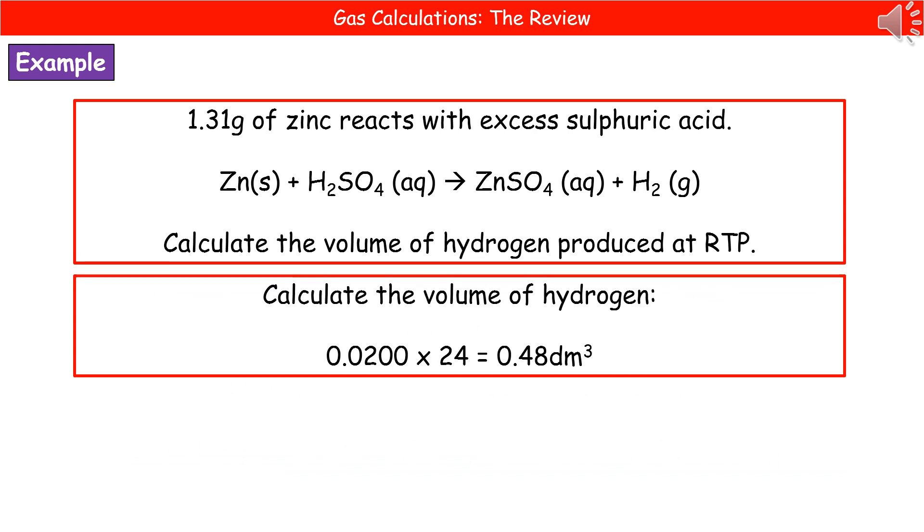Now we know the amount in moles. All we then need to do is times that by 24 to get the volume of our hydrogen. So 0.0200 times by 24 gives us 0.48 decimeters cubed as our volume that the hydrogen would actually occupy.